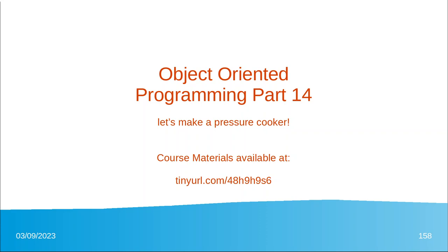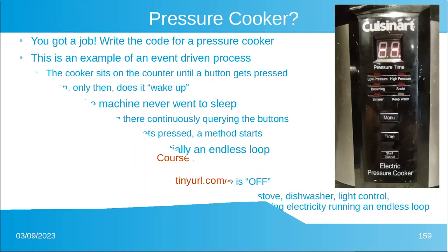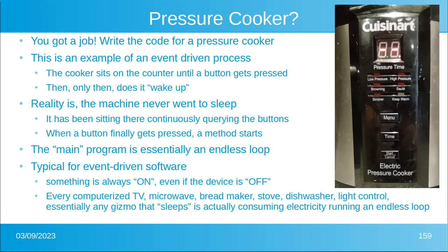Welcome again to object-oriented programming. This is part 14. We're going to make a pressure cooker in this example. You've got yourself a job — you're going to write the code for a new pressure cooker like the one shown.